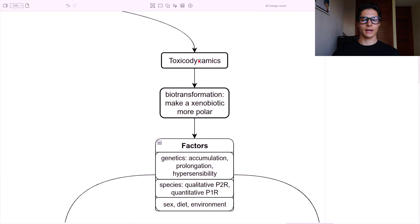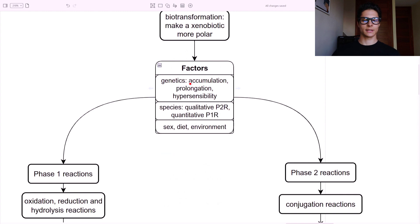And now let's talk about toxicodynamics. This is the biotransformation. The goal is to make a xenobiotic more polar because polarity equals water solubility and renal excretion, which is our main way of excretion. The factors - genetics, accumulation, prolongation and hypersensitivity of toxins, the species. Phase two reactions are qualitative. Phase one reactions are quantitative. Also sex, diet, and environment.